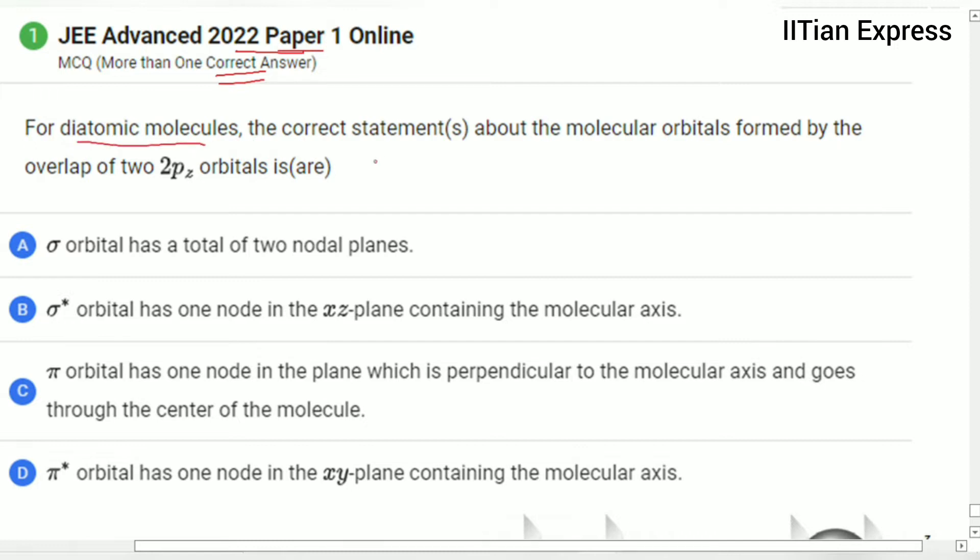This question reads: For diatomic molecules, the correct statements about the molecular orbitals formed by the overlap of two 2p orbitals is/are. So first of all, you are supposed to choose the correct statements. Let us go through the options.